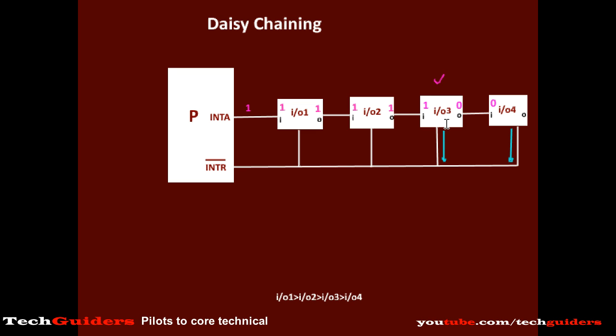How does the selected device get serviced? We are not using polling. The device should identify itself to the processor — that is, the vectored interrupt approach. The device whose input equals 1 and output equals 0 will proceed by placing its interrupt vector code onto the data bus. The processor takes the code which points to the appropriate interrupt service routine, and it will be executed.